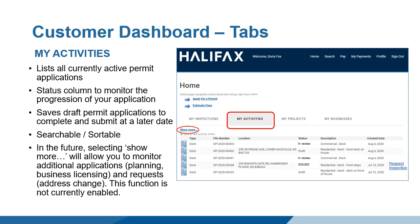The information is searchable, so if you have multiple permit applications, you can easily locate a specific permit. In the future, the tab will also contain information on planning applications, address change requests, and business licensing.